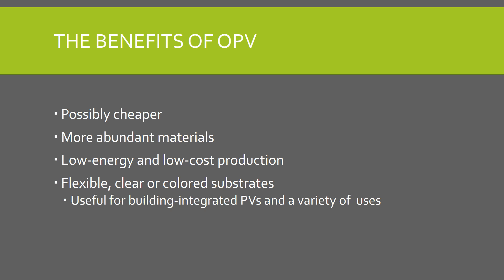This is because OPV can be made via cheaper processes than inorganic cells. Furthermore, organic cells have a wide spectrum of applications. These cells can be produced on flexible, clear, or colored substrates, which makes them useful for integration with buildings, and gives them a variety of uses.